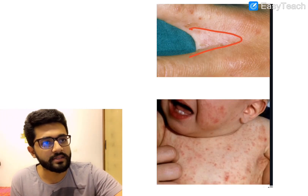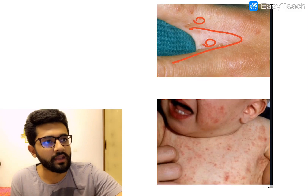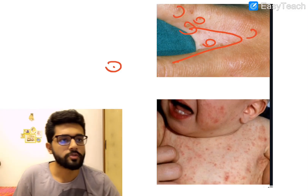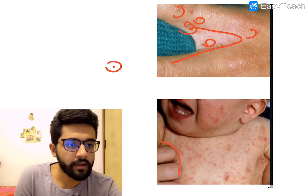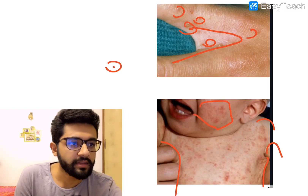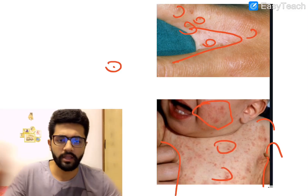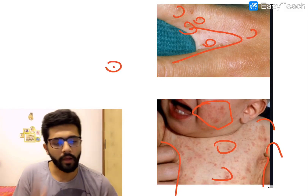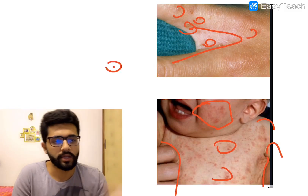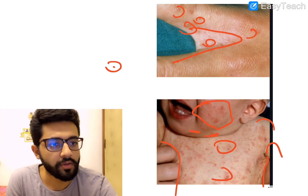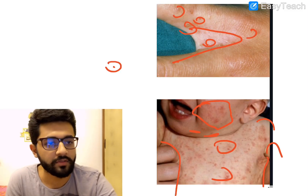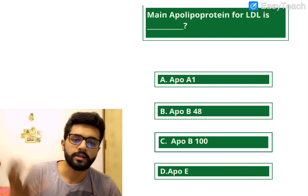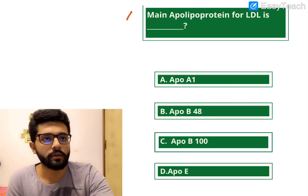Looking at images: in adults you can see burrows in the inter-digital web spaces. In a neonate, you can see facial involvement — and if you notice involvement of face, scalp, and palms and soles, think of a neonate or infant. The lesions in infants are not the typical burrows seen in adults but are more pustules and vesicles. That covers the different distribution of scabies.